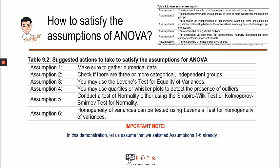For assumption one, just make sure you gather quantitative data, and for assumption two, make sure that the independent groups are categorical. For assumption three, if you want to test the independence of observations, you may use the Levene's test for equality of variances.